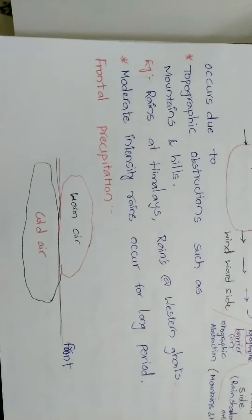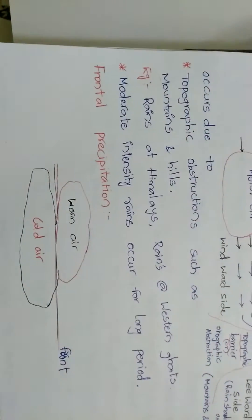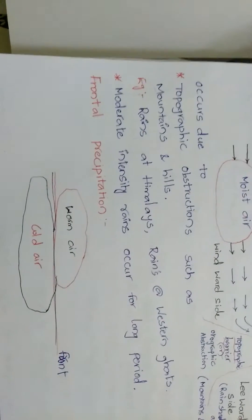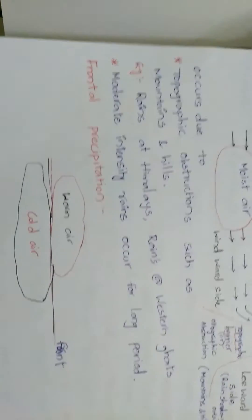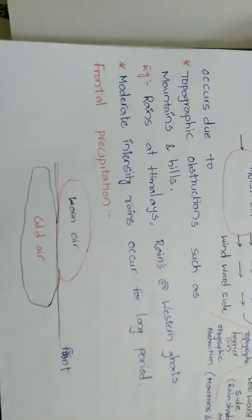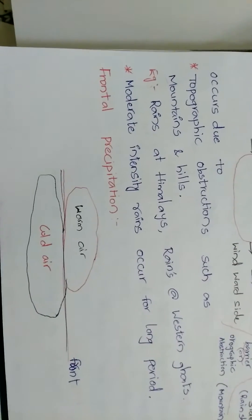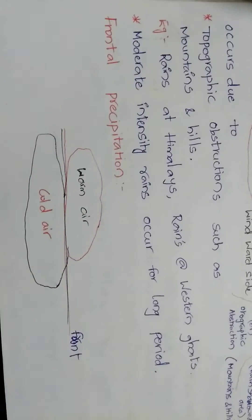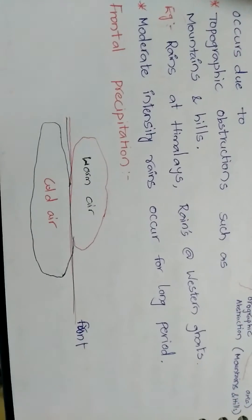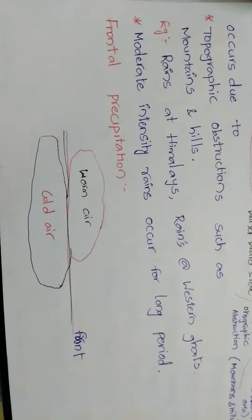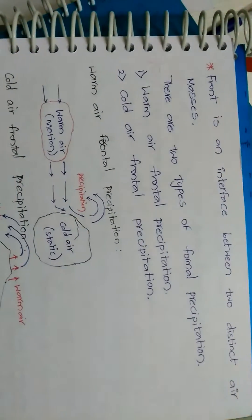Frontal precipitation is the combination of warm air and cold air. From the figure, we observe the front. The front is the line between the warm air and cold air. This front acts as an interface between the two different phases of air. There are two types of frontal precipitations.